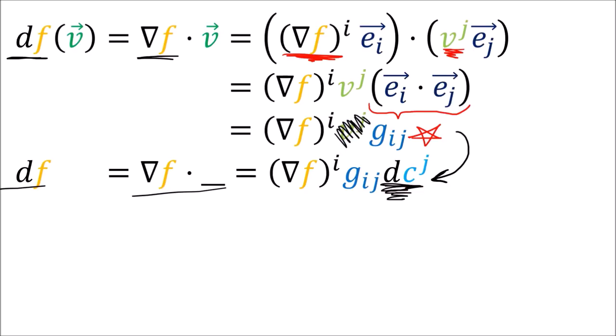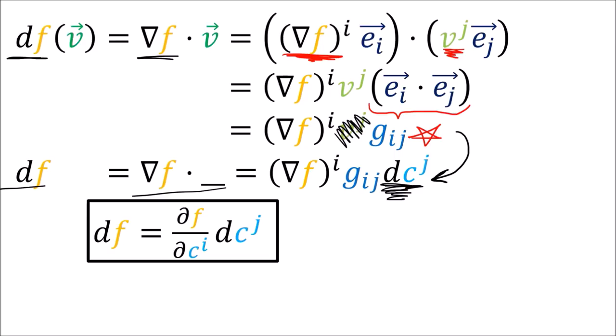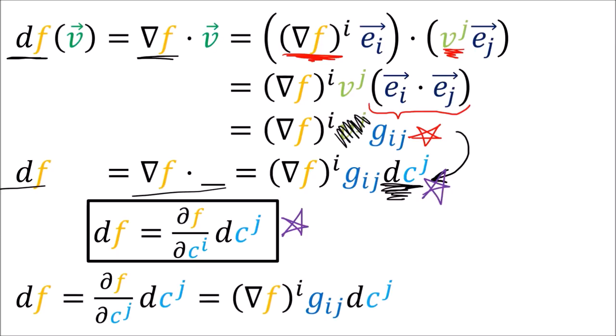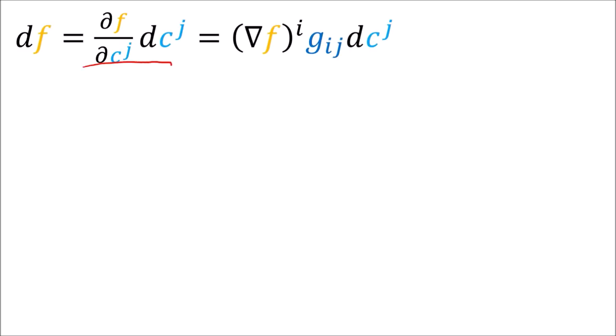We know from previous videos that the df covector field can be expanded in the covector basis where the partial derivatives are the components. So we've discovered that df is equal to two different things: the expansion in the covector basis with partial derivative components, and a formula using the components of del f and the metric tensor components. Both formulas involve the basis covectors dc_j, so if these formulas are equal their components must also be equal.